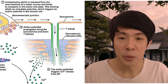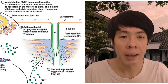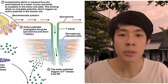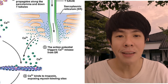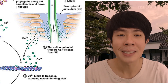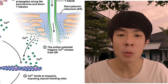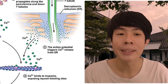Action potential propagates along the sarcolemma and down the T-tubules. The action potential triggers calcium ions to be released from the sarcoplasmic reticulum. Calcium ions then bind to troponin, exposing the myosin binding site of actin filaments.